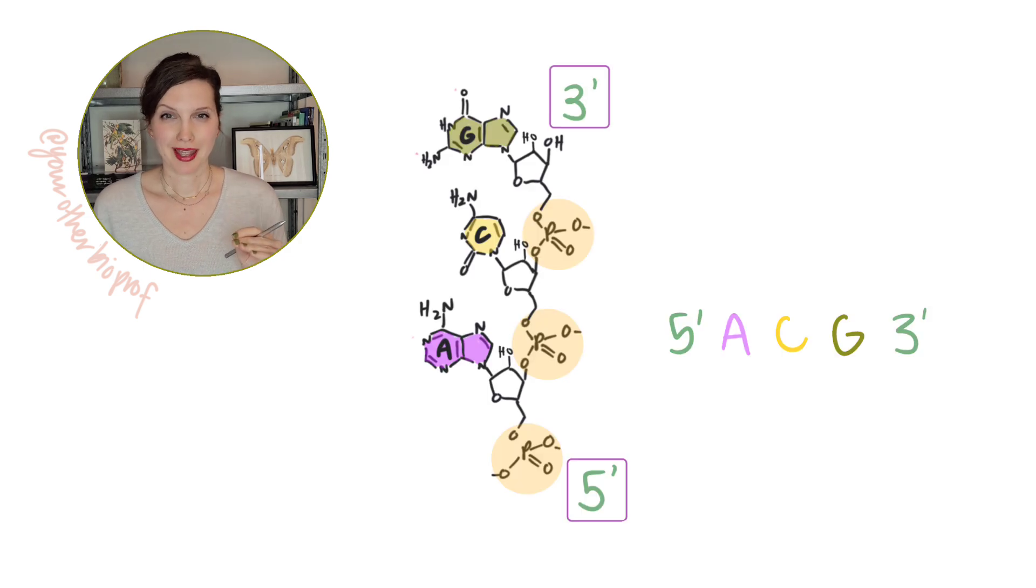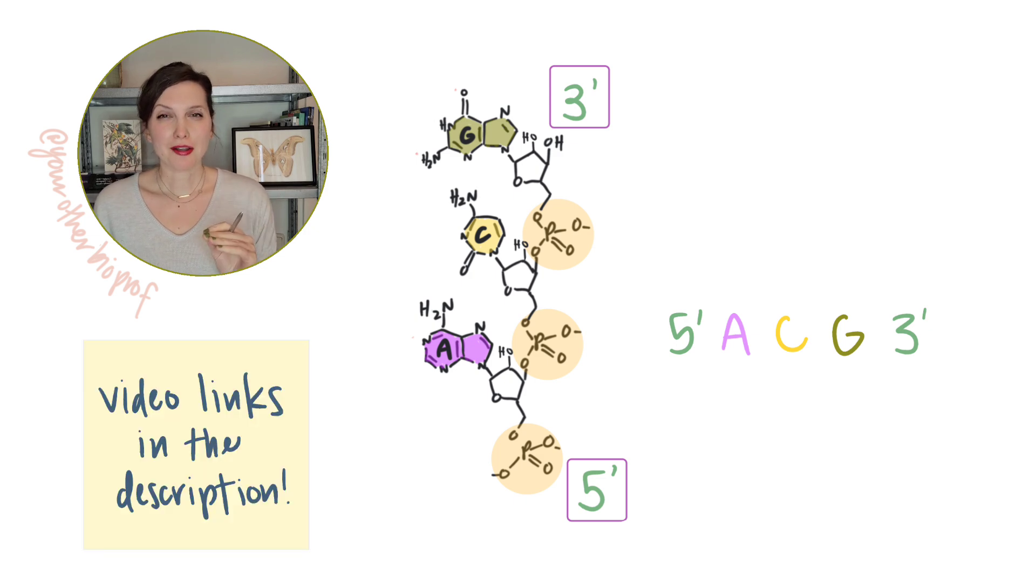Now by directionality, we're talking about five prime and three prime. And if you want some more review on that, or if you want to see how to tell which end is which by looking at nucleotides, check out this short video. But for now, if you can just keep in mind that one end of the strand is the five prime end and the other end of a strand is the three prime end, we can get through this together.